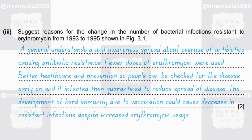As the world is advancing, there is better healthcare and prevention, so people can be checked for the disease early on and, if infected, quarantined in order to reduce spread. The development of herd immunity due to vaccination could be another potential explanation. Herd immunity occurs when a significant portion of the population becomes immune to a particular infectious disease, either through vaccination or prior infection, reducing the likelihood of disease transmission within the community.